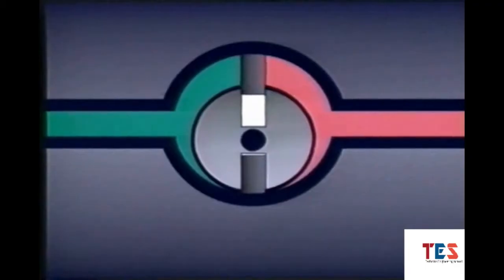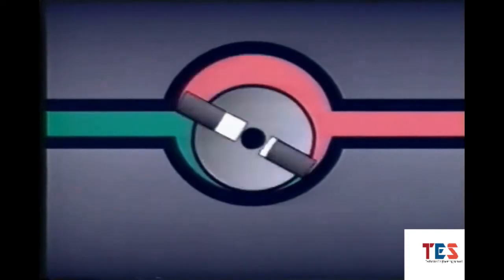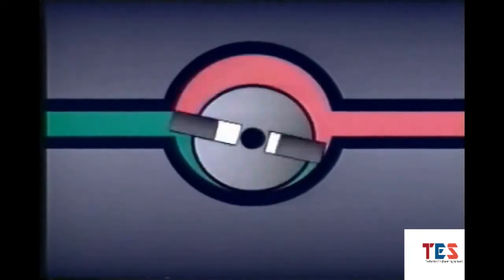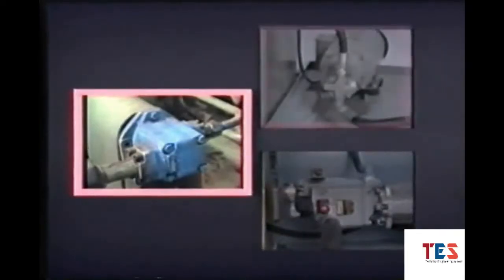For example, the vane pump we have seen throughout this course creates an area of increasing volume on its suction side and an area of decreasing volume on its outlet side. Fluid is pushed into the pump by atmospheric pressure, then displaced from the pump as it turns.